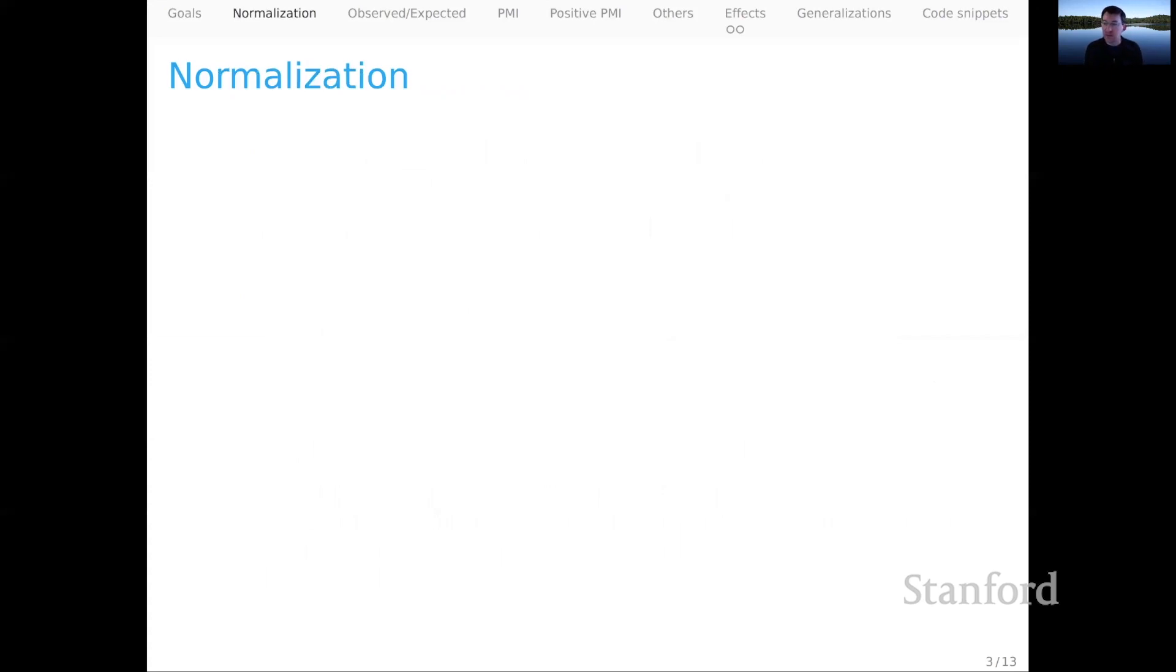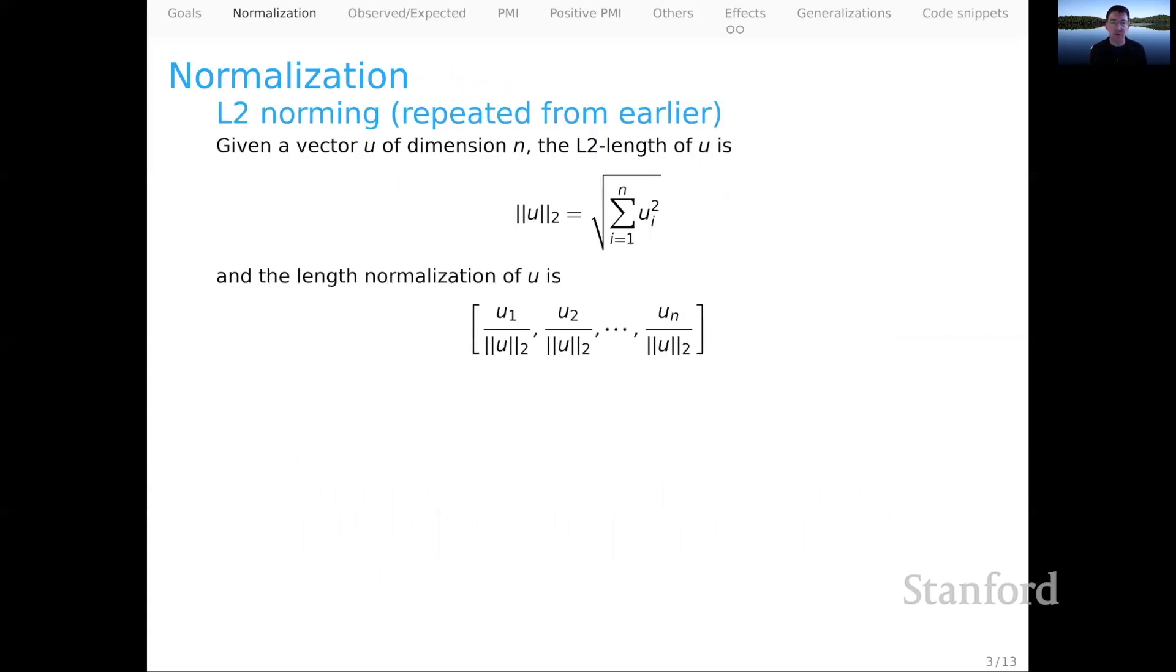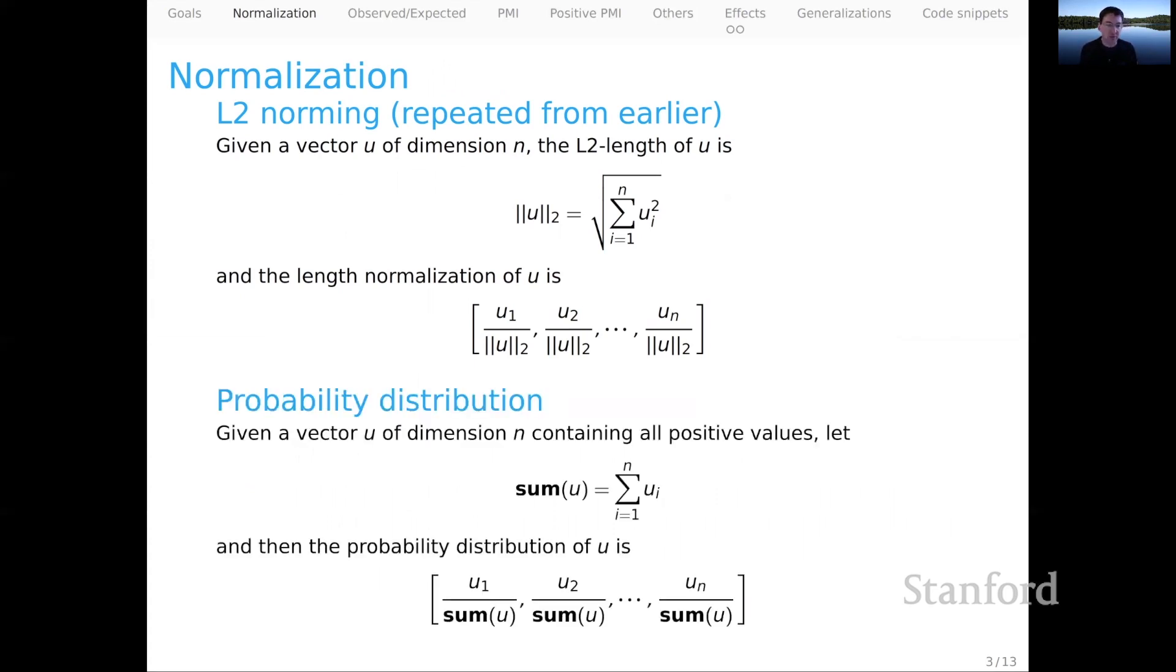So let's start with the most basic kind of scheme, and this is a scheme that will pay attention only to the row context. This is normalization. So this is actually a repeat from the lecture on vector comparison, L2 norming. We calculate the L2 length as a fixed quantity for each row vector. And then the length normalization of that row vector is just taking each value in the original vector and dividing it by that fixed quantity, the L2 length. There's a related and perhaps more familiar notion, which I've called probability distribution. We just replace that normalizing constant, the L2 length, with the sum of all the elements in the vector. We do this element-wise division by that fixed quantity to normalize the vector into a probability distribution. I think both of these methods can be powerful, but the shame of them is that they are paying attention only to the row context. For a given cell ij, we're looking just across the row i. We're not considering the context that could come from the column j. So let's begin to correct that omission.